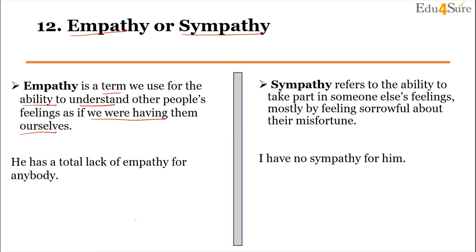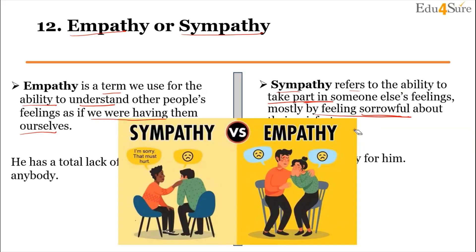What is sympathy? Sympathy refers to the ability to take part in someone else's feelings, mostly by feeling sorrowful about their misfortune. For example: 'I have no sympathy for him' — meaning I don't have any support for him. In empathy, both people are sad — he feels it himself. But in sympathy, he is only able to understand; he is sorry for him, but he doesn't actually feel the same.